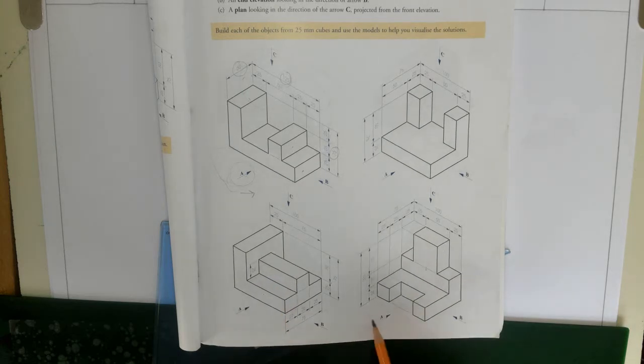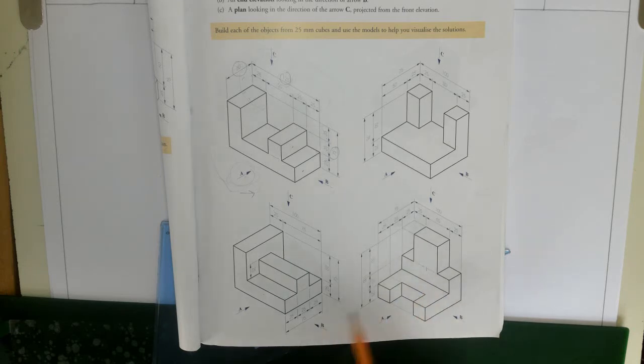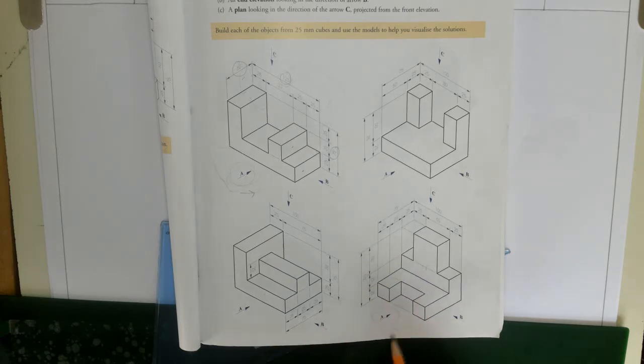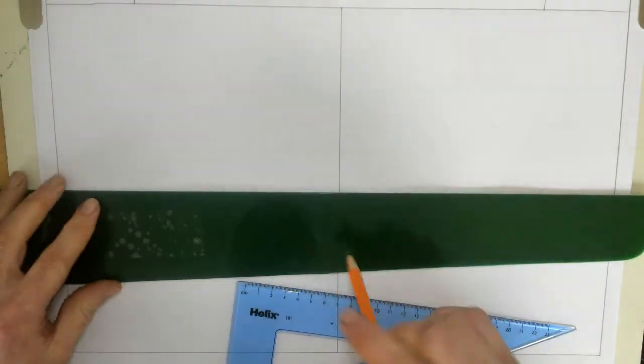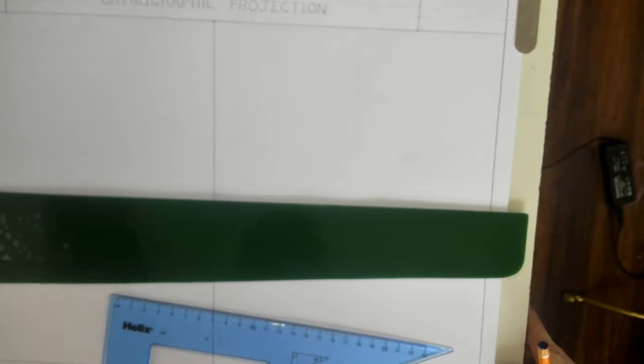So arrow A for the elevation is pointing on the right hand side, so we always start with the elevation. Number one, so that's going to be going on the right. So let's start in the middle of the page. I do have a few steps, and the topic, as you know, is orthographic projection.